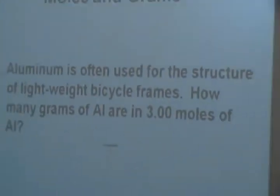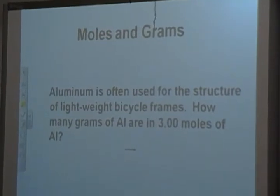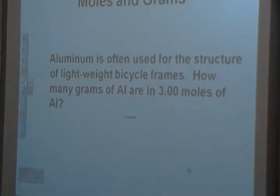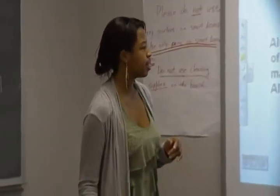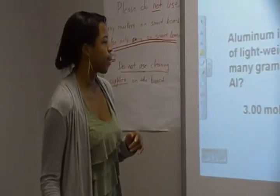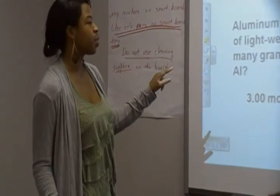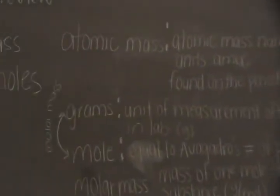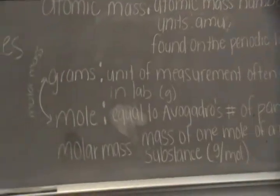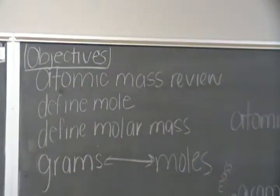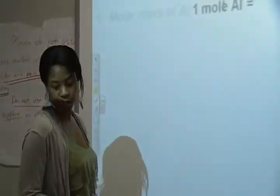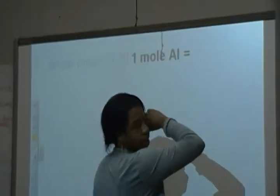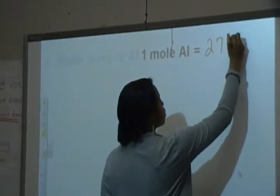This is an assessment problem for everyone to do as a class. We'll work it out together on the board. The problem says: aluminum is often used for the structure of lightweight bicycle frames. How many grams of aluminum are in 3 moles of aluminum? First thing we need to define is the molar mass of aluminum, which is 27 grams per mole.